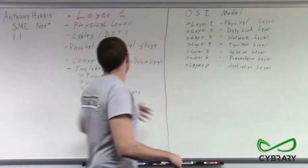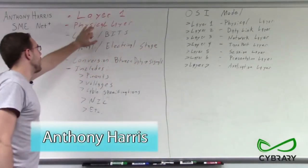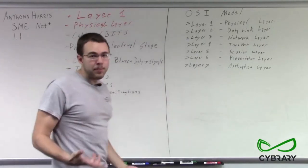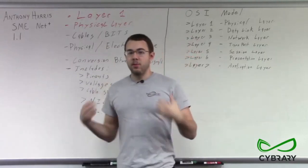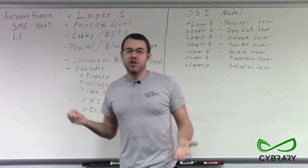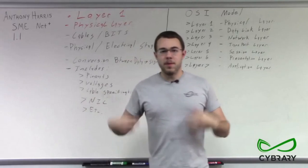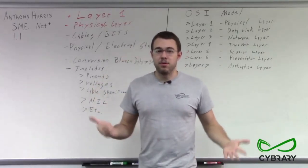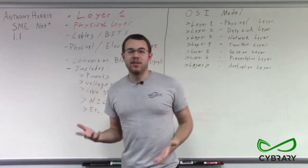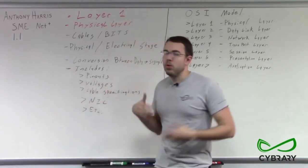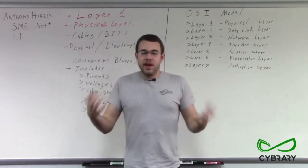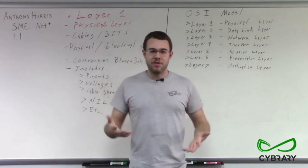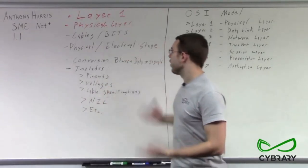Our first layer is going to be our physical layer, or layer 1. The physical layer is all about cables and bits — physical things that we can hold and measure. It includes everything from electrical impulses to wireless data traveling back and forth. We may not think about wireless signals as actual physical things, but even though they're radio signals, they're still physically measurable signals. So those are going to be layer 1.